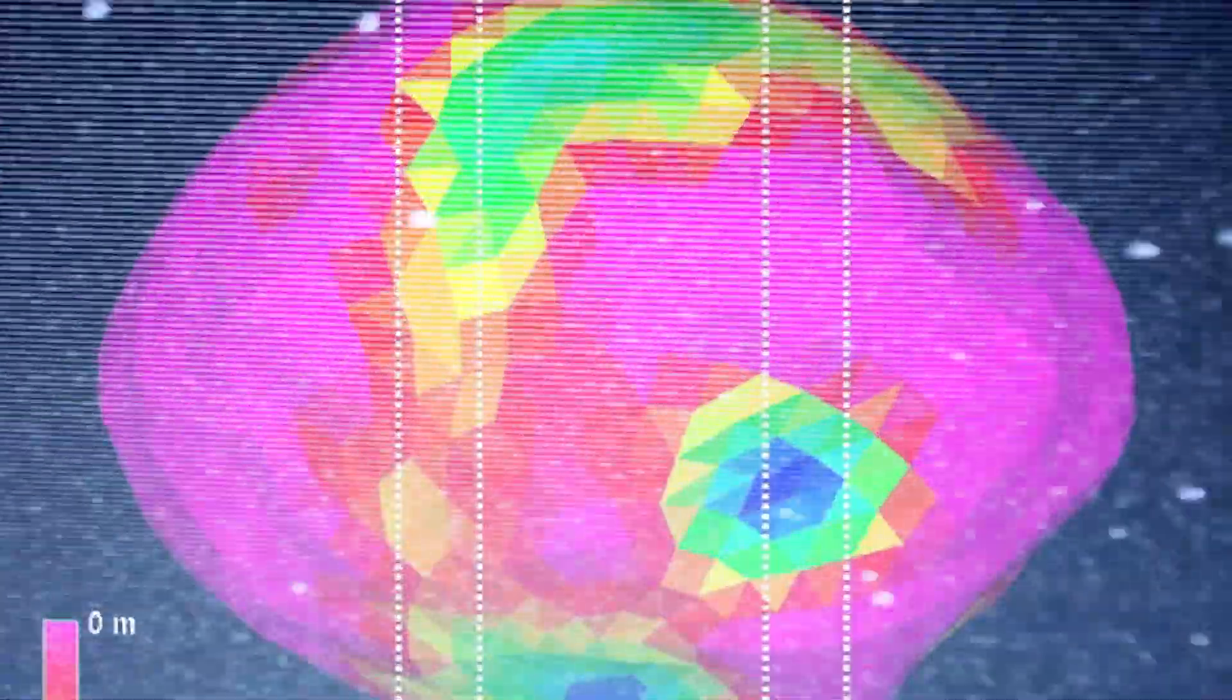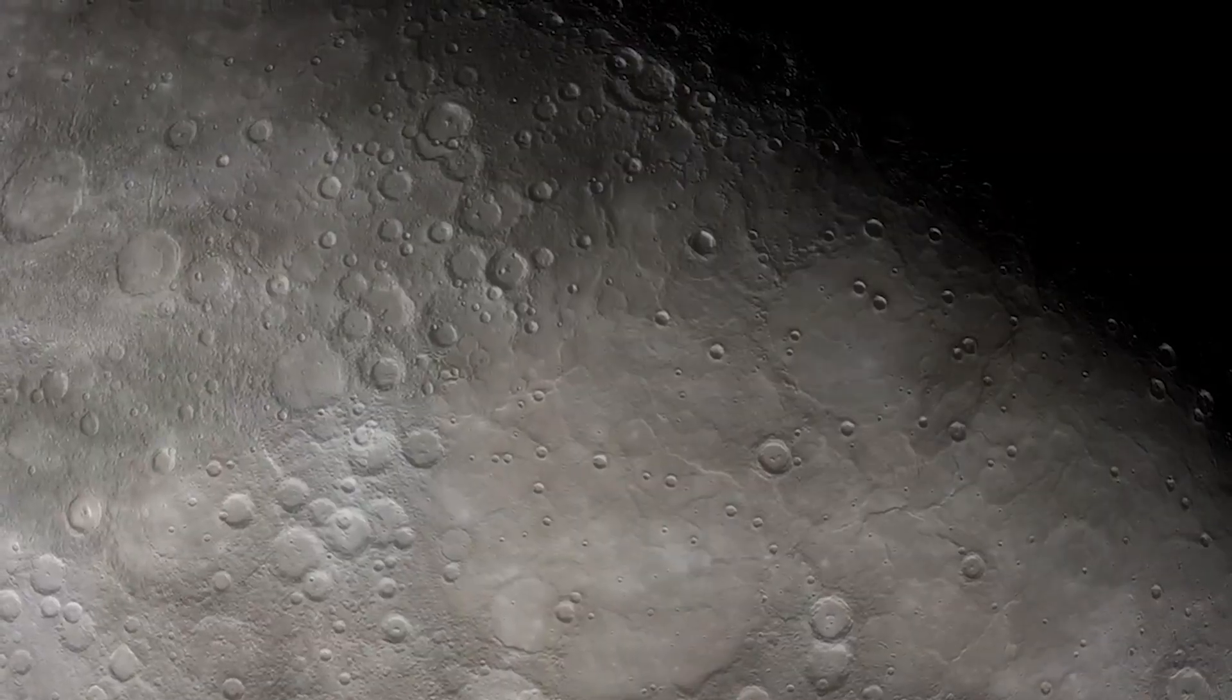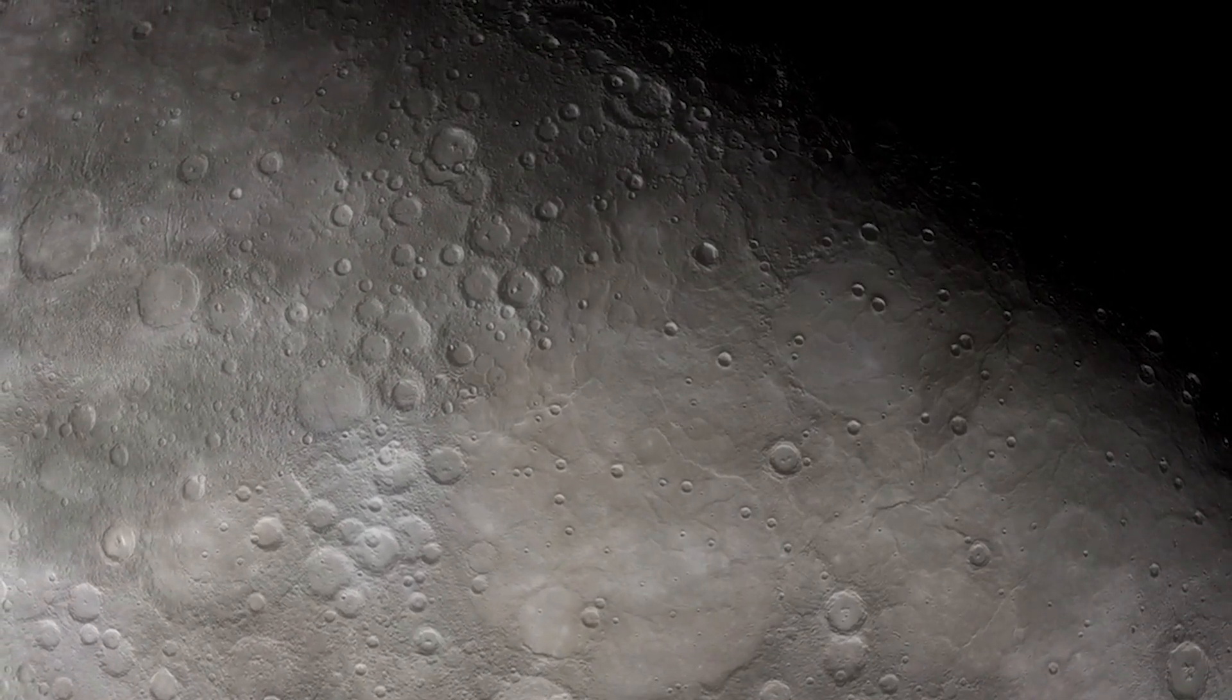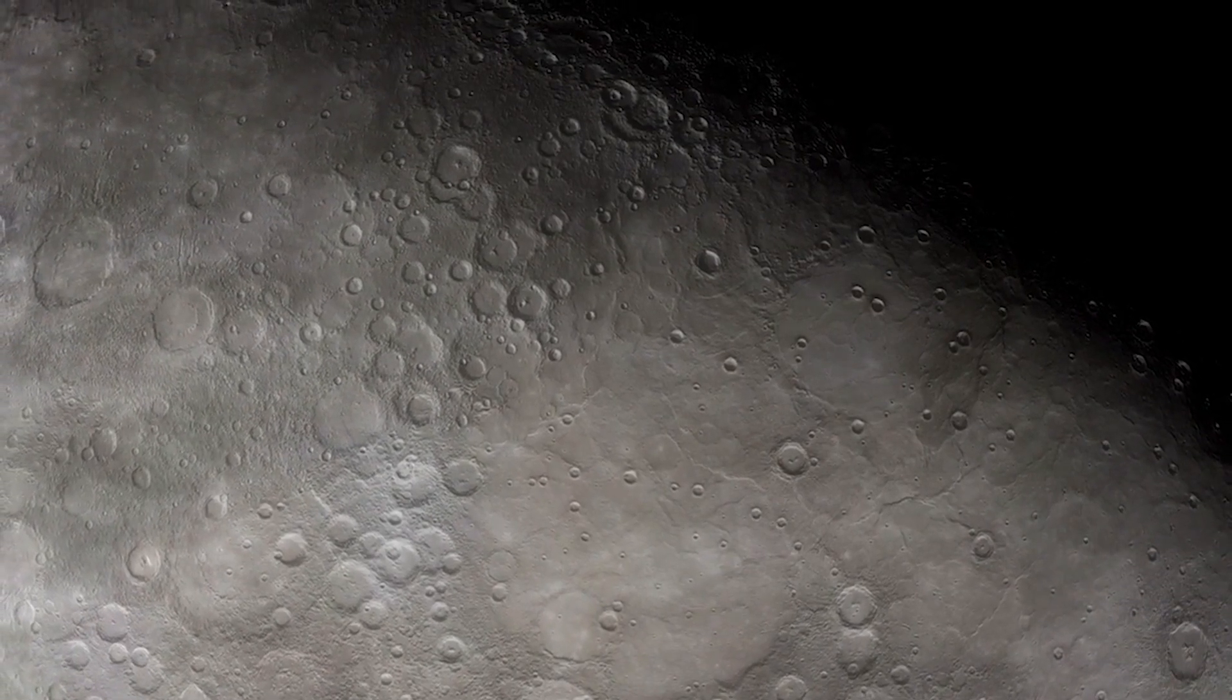Its materials have led astronomers to hypothesize that 16 Psyche is the core of a prior Mars-sized planet that has since lost its outer layers of rock. At 130 miles in diameter, its metal deposits are worth an astounding $10,000 quadrillion, 93,500 times the world's GDP.